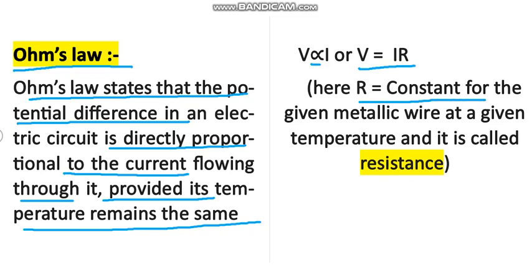R is the constant of the given metallic wire and it is called resistance. Ohm's law is used in electrical devices to apply the correct amount of current for a given resistance.